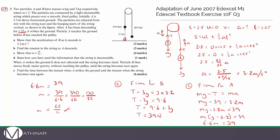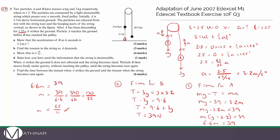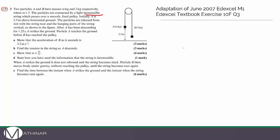Part D: state how you've used the information that the string is inextensible. The way we used it is that the tension throughout the string is constant — the tension on A's side equals the tension on B's side.